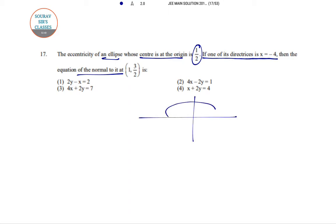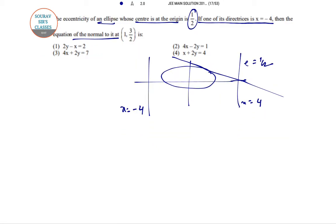This is the diagram. This is x equal to 4, this is x equal to minus 4. This is the line, and this is e equal to half. a by e equal to 4, so a equal to 4e, that is 2.